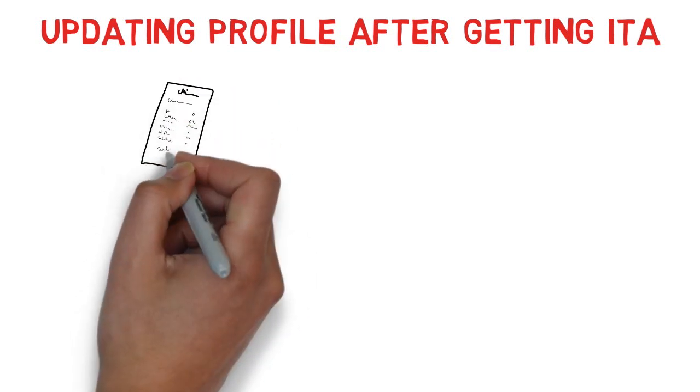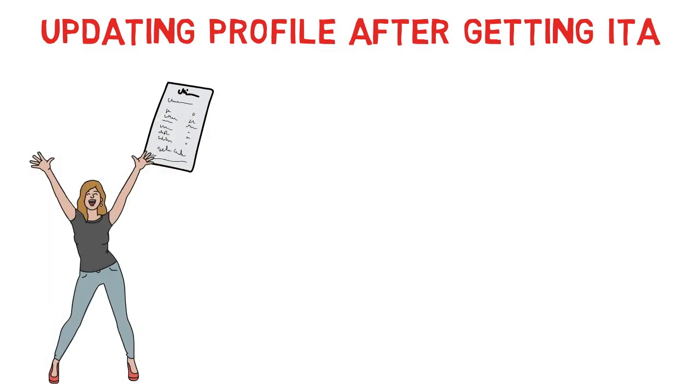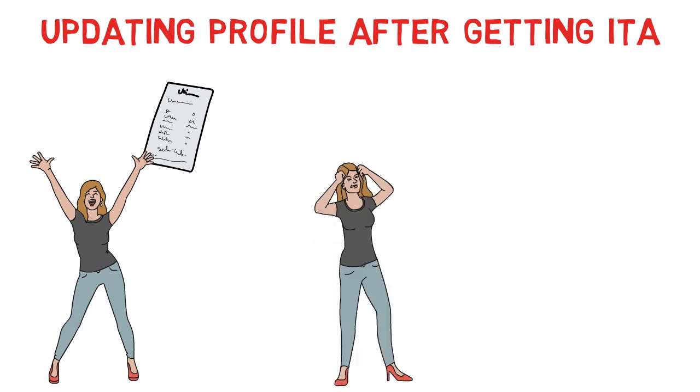Now let's talk about updating your profile after getting your ITA — it gets a bit more complex. After getting the ITA, it's not as simple as before. Once you've got the ITA, your profile gets locked. So when we get the ITA we're very happy, but when you go to fill the APR — the Application for PR — you might find some information that is incorrect.